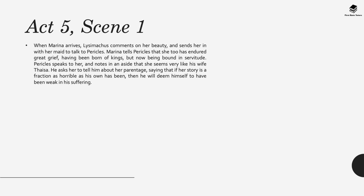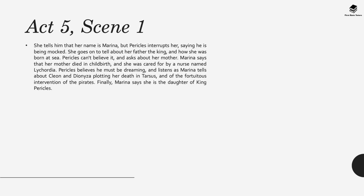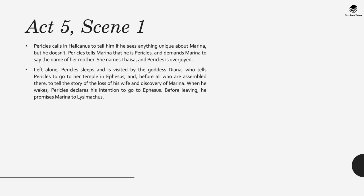When Marina arrives, Lysimachus comments on her beauty and sends her in to talk to Pericles. Marina tells Pericles that she too has endured great grief, having been born of kings and now being bound to servitude. Pericles speaks to her and notes in an aside that she seems very much like his wife Thaisa. He asks her to tell him about her parentage. She tells him her name is Marina, and tells about her father the king, how she was born at sea, and that her mother died in childbirth and she was cared for by a nurse named Lycordia. She tells about Cleon and Dionysa plotting her death in Tarsus and the fortuitous intervention of the pirates. Finally Marina says she is the daughter of King Pericles. Pericles is overjoyed and tells her he is Pericles.